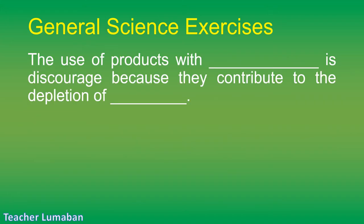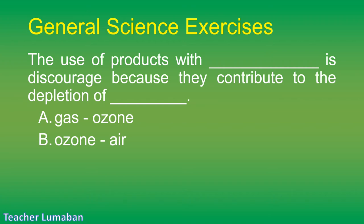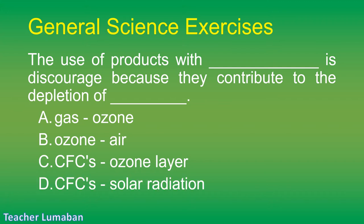The use of products with blank is discouraged because they contribute to the depletion of blank. Letter A: gas, ozone. Letter B: ozone, air. Letter C: CFCs, ozone layer. Letter D: CFCs, solar radiation.